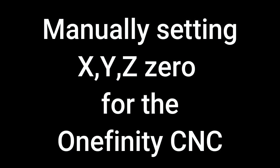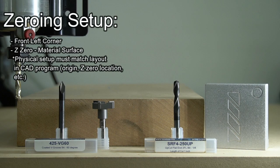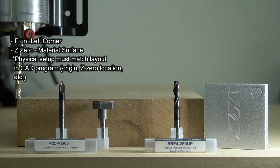Manually setting zero for the Onefinity CNC. When zeroing your Onefinity, there's a few things to keep in mind. Make sure that your CAD program matches the setup on your machine with your front left corner for zero and the Z zero set to the material surface.